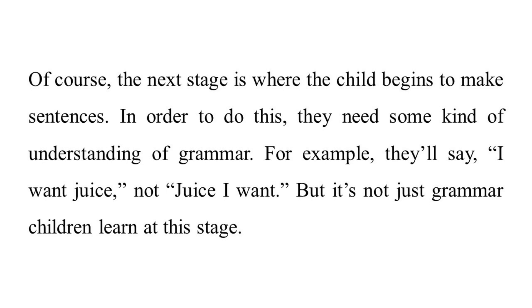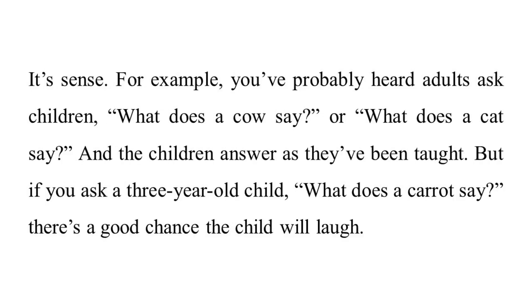The next stage is where the child begins to make sentences. In order to do this, they need some kind of understanding of grammar. For example, they'll say 'I want juice,' not 'juice I want.' But it's not just grammar children learn at this stage — it's sense. You've probably heard adults ask children, 'What does a cow say?' or 'What does a cat say?' and the children answer as they've been taught. But if you ask a three-year-old child, 'What does a carrot say?' there's a good chance the child will laugh.